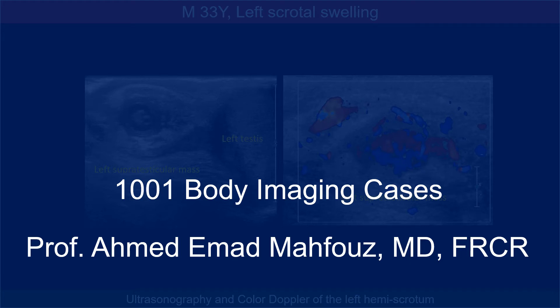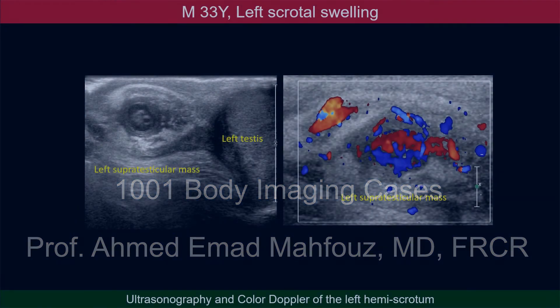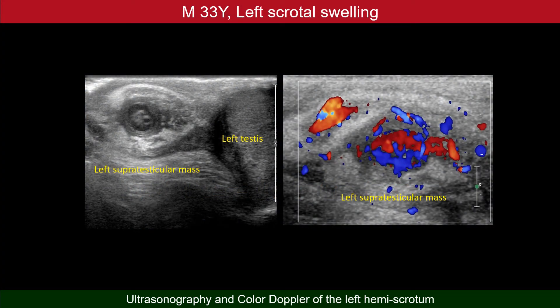Welcome to the body imaging cases. This young male came with a left scrotal swelling. The lesion shows itself on ultrasonography as concentric rings and shows color on color Doppler ultrasonography.